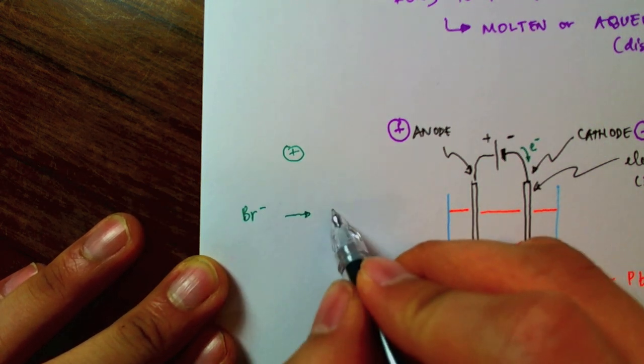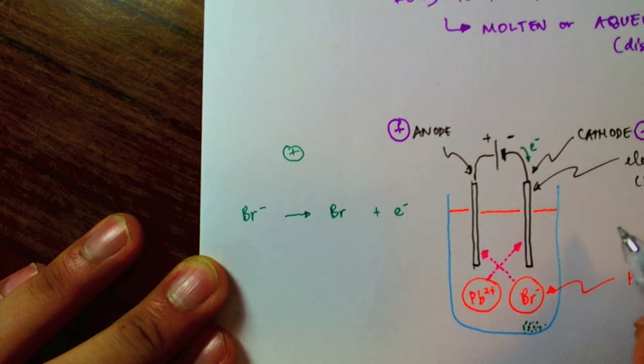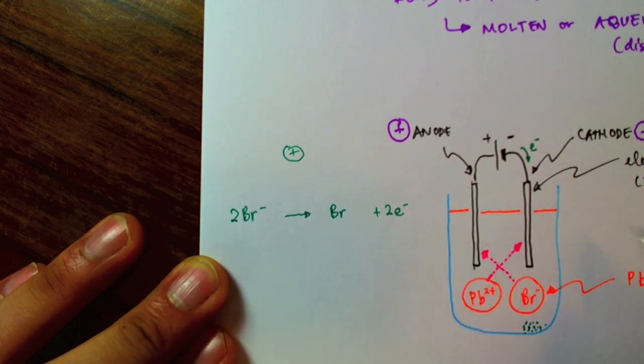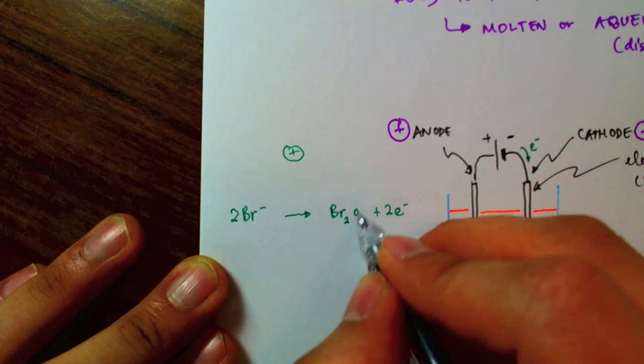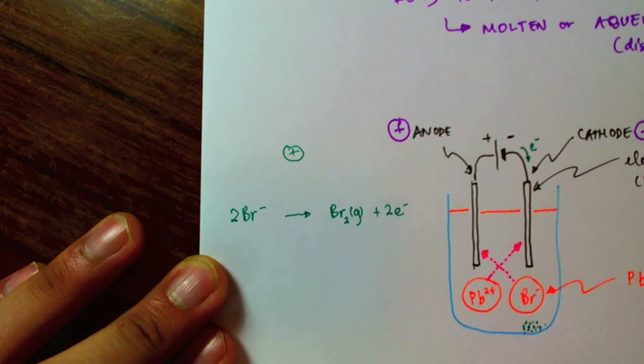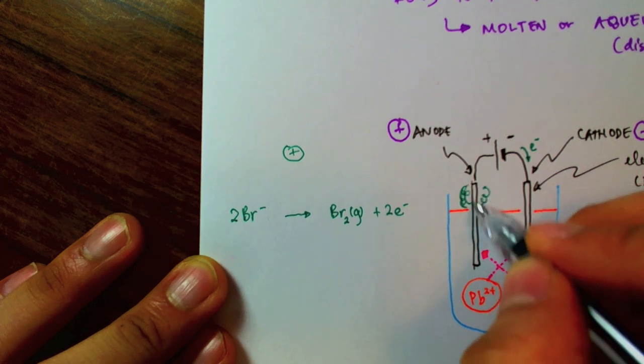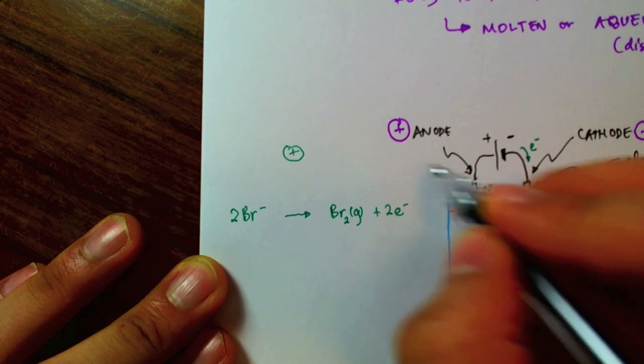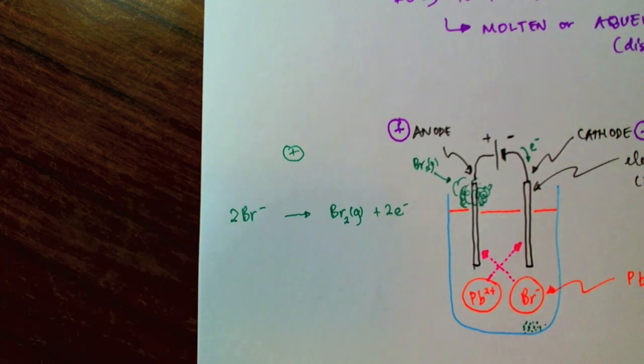So, the bromine are going to give up their electrons. They're going to give two electrons up, to be exact, because bromine exists as a diatomic molecule. And so, we'll see a cloud of bromine gas forming around the anode there.